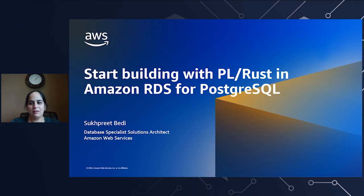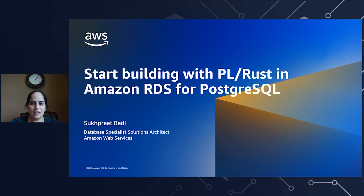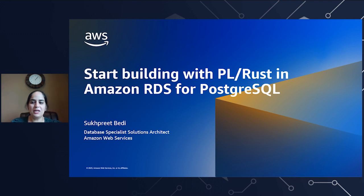Hello and welcome everyone. Thank you for joining me today for this talk. My name is Sukhpreet Bedi. I'm a database specialist solutions architect with AWS focusing on Amazon RDS and Amazon Aurora for PostgreSQL database engine. Today in this session we will talk about how you can get started with using PL Rust and write high-performance Rust code directly into your Amazon RDS databases.